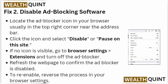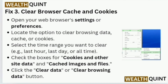To re-enable, reverse the process in your browser settings. Fix 3: Browser Cache and Cookies. Open your web browser settings or preferences. Look for the option to clear browsing data, cache, or cookies. Select the time range you want to clear — for example, last hour, last day, or all time. Check the boxes for cookies and other site data, and cached images and files. Click the Clear Data or Clear Browsing Data button.